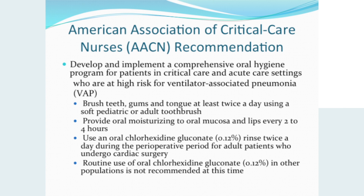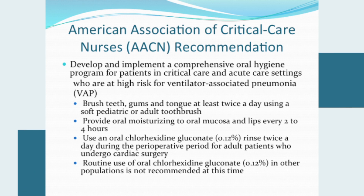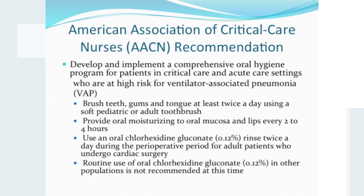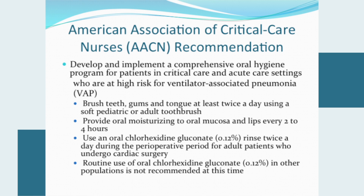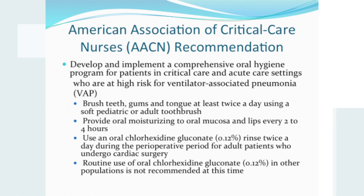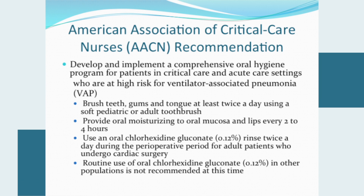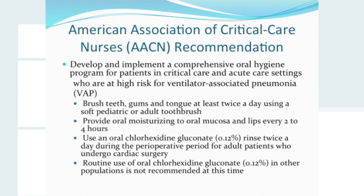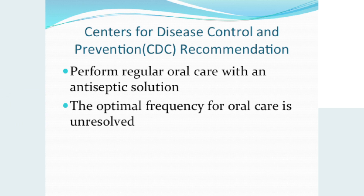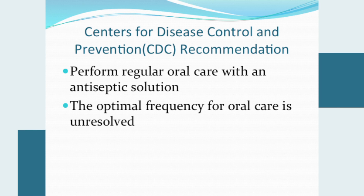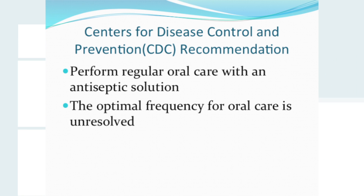The AACN recommends a comprehensive oral hygiene program for patients in critical care and acute care settings at high risk for VAP, to include: brushing teeth, gums, and tongue at least twice a day using a soft pediatric or adult toothbrush; providing oral moisturizing gels to oral mucosa and lips every two to four hours; and use of 0.12% oral chlorhexidine gluconate rinse twice a day during the perioperative period for adult patients undergoing cardiac surgery. Routine use of 0.12% chlorhexidine gluconate in other populations is not currently recommended by AACN. The CDC recommends regular oral care with an antiseptic solution, and studies have shown bacterial biofilm should be removed daily.